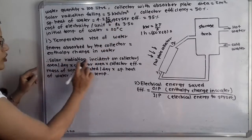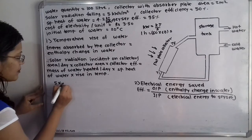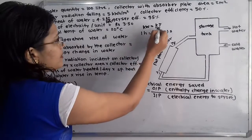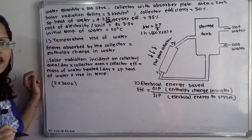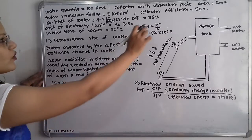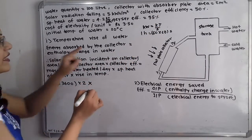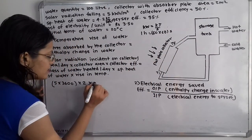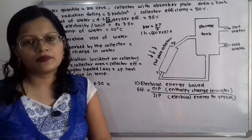So solar radiation incident on the collector equals 5 multiplied by 3600 — multiplying by 3600 seconds cancels the seconds unit. Then collector area is 2 meter square and collector efficiency is 50%, that means 0.50. This equals mass of water heated per day — water quantity is 100 litres — multiplied by specific heat of water 4.2, multiplied by the rise in temperature delta T.